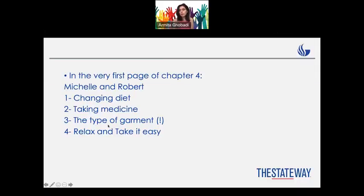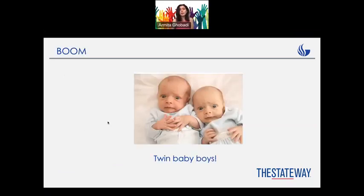If you open the book to the very first page, you can read the story of Michelle and Robert. They are a couple who were exposed to the problem of infertility — which means whenever you're trying to get pregnant for over 12 months but cannot be successful. They went to the doctor, changed their diet, took some medicines, even changed their type of garments, and tried to relax. After almost one year, they had twin baby boys.